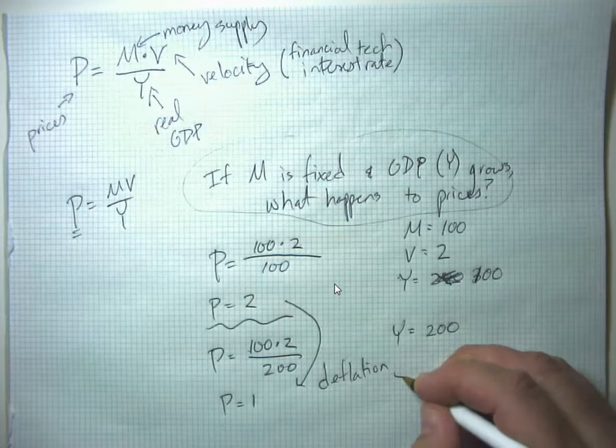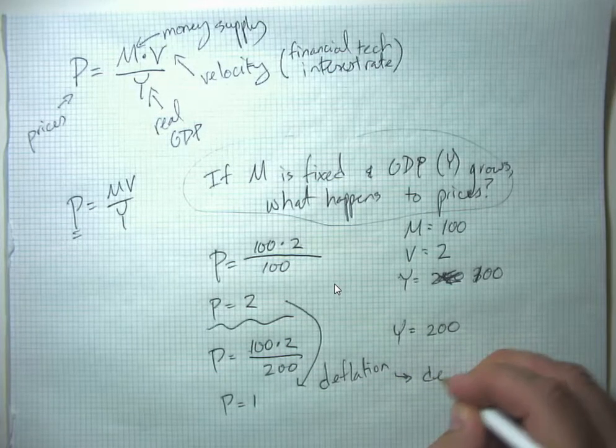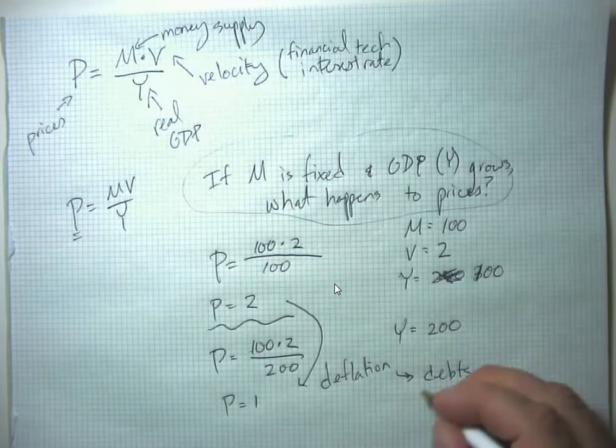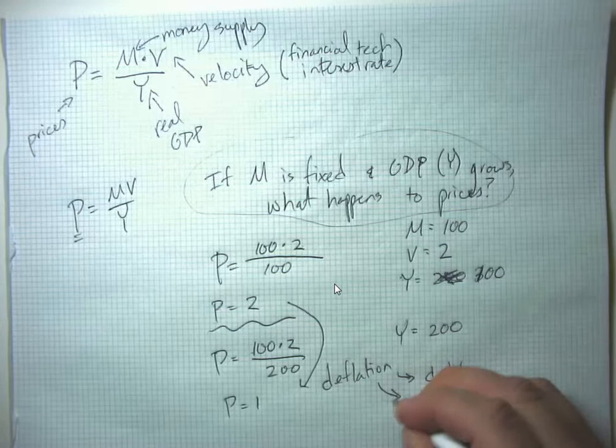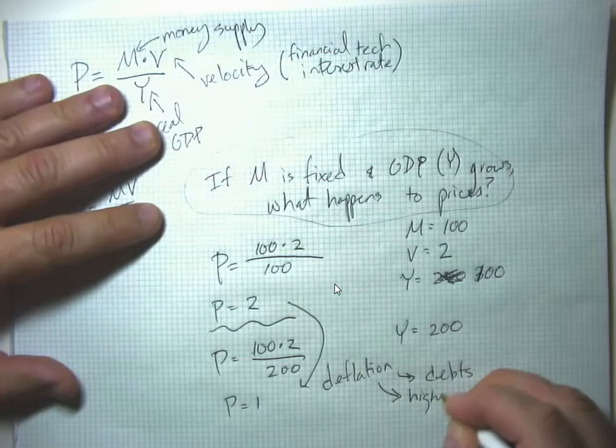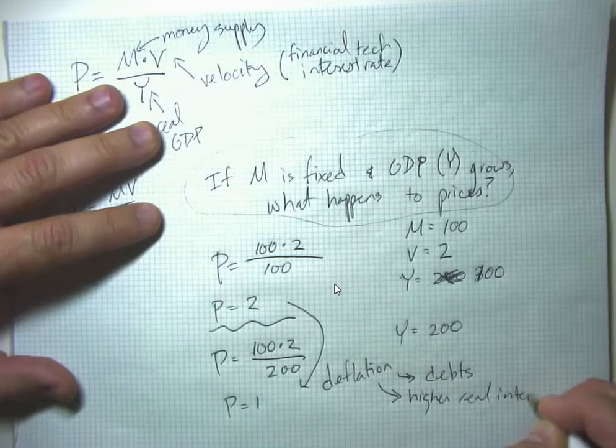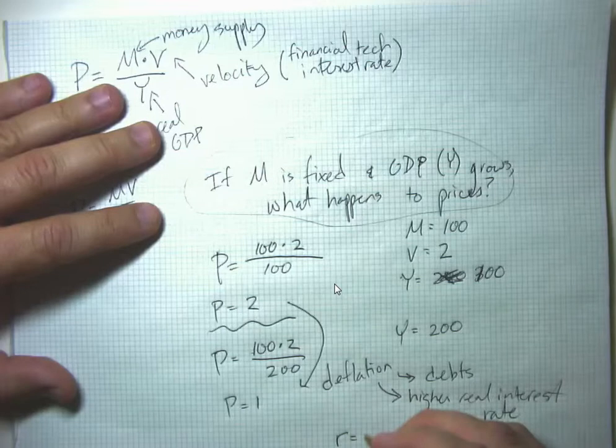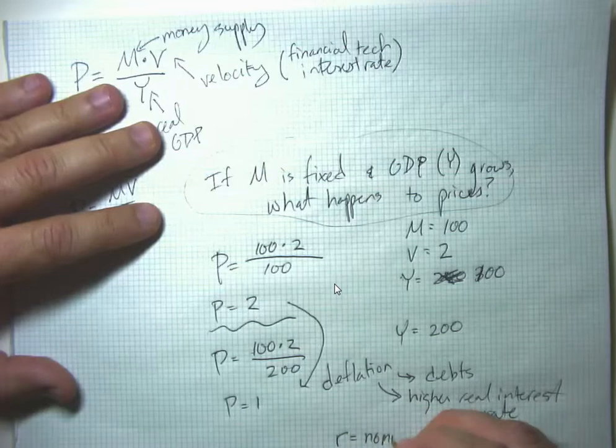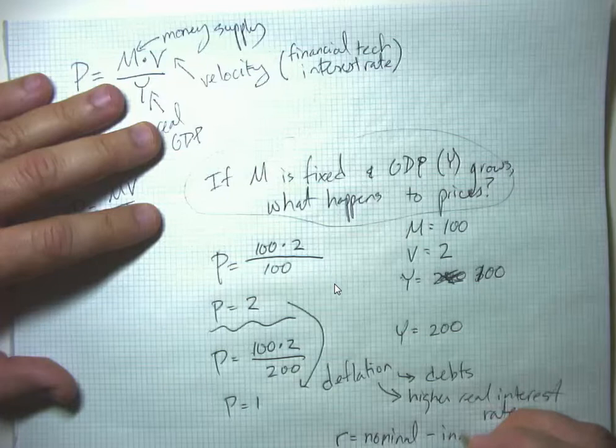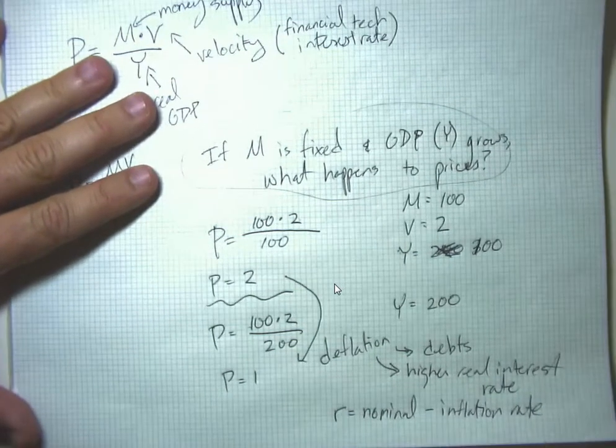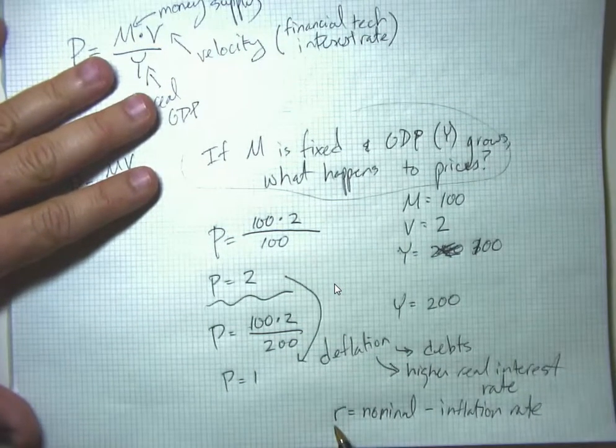One problem is debts. When you have deflation or negative inflation, you're going to have higher real interest rates. Because remember, the real interest rate R is the nominal interest rate minus the inflation rate. If you have deflation, then the inflation rate is negative and the real interest rate is actually higher than the nominal rate.